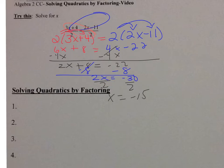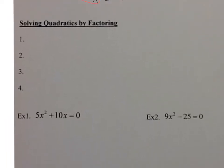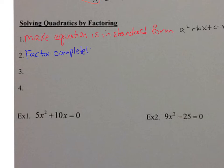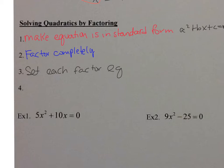Now let's try the factoring. When you solve a quadratic by factoring, the very first thing is you have to make sure it's in standard form — that's step 1. Standard form is ax squared plus bx plus c equals 0. Step 2, you're going to factor completely. Step 3, you're going to set each factor equal to 0. And then the last thing you're going to do is solve.